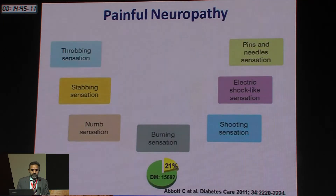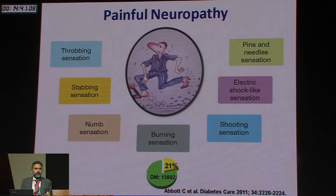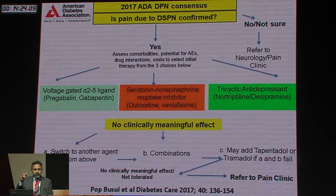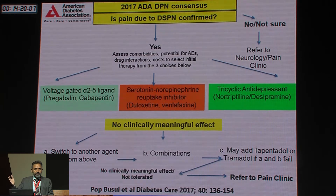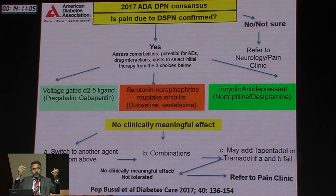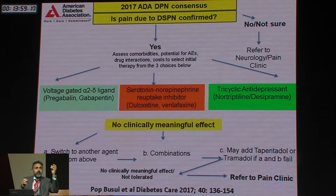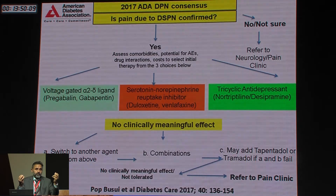What about painful neuropathy? One in five patients get painful neuropathy. How do you treat it? You have a choice: voltage-gated alpha-2 delta ligands (pregabalin or gabapentin), SNRIs (duloxetine or venlafaxine), or tricyclic antidepressants if patients can't afford the others. The 2017 ADA DPN consensus statement says you have a choice of either, or if you have side effects at higher doses, use combinations — for example, low-dose pregabalin with low-dose duloxetine, or a tricyclic with a gabapentinoid.